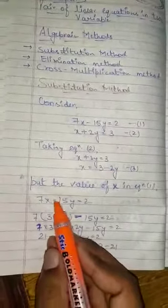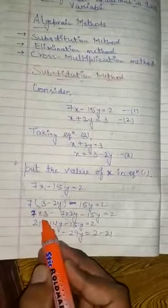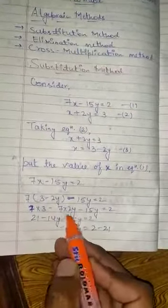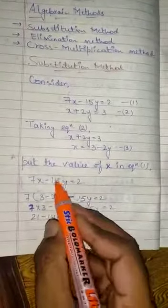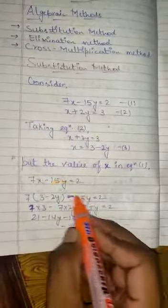So we have 7 times (3 minus 2y). 7 times 3 is 21, 7 times 2y is 14y. This is our left-hand side. And minus 15y is as it is, exactly how it was, equals 2.